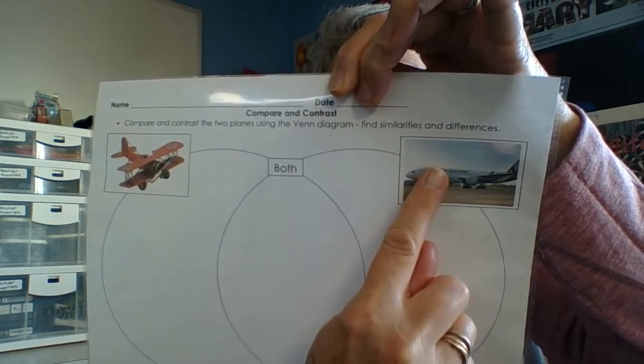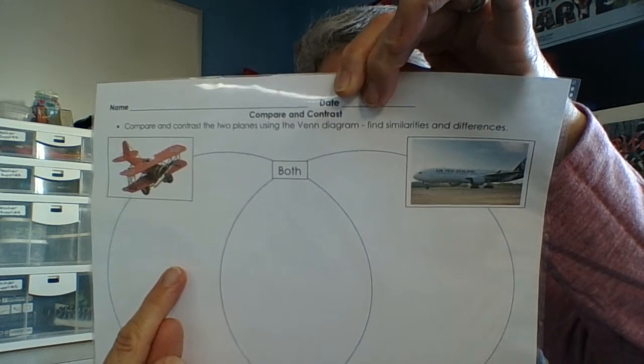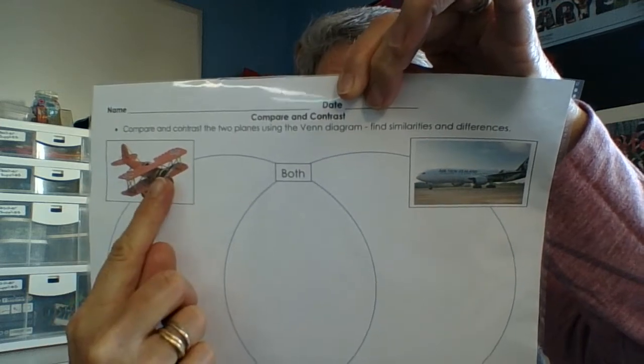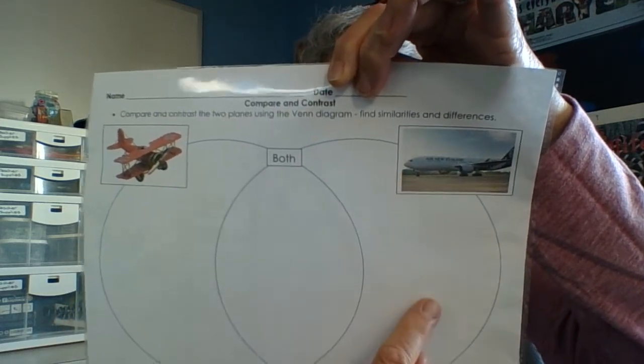I notice that this one has windows. This one has no windows. This one has a propeller. This one has a jet engine.